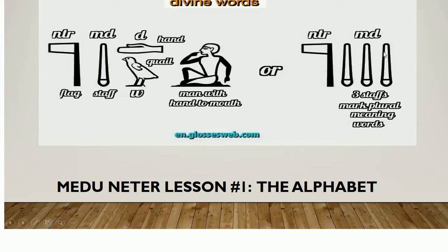So here we have 'medu,' because we have three staffs, and then we have 'inter' — so 'medu inter,' 'medu inter.' I want everybody to write these glyphs down. You can write it either way. I would encourage this way first, and then once you get comfortable, this is a much quicker way to write out 'medu neter.' So once you get this down, you can head on over to the alphabet, and I'm going to break that down for you step by step.